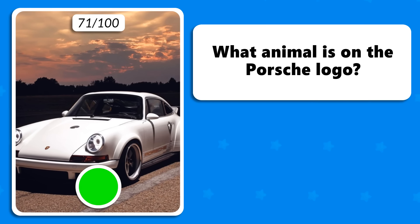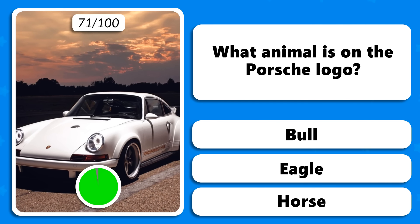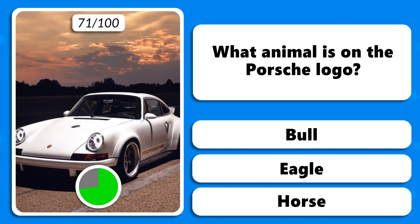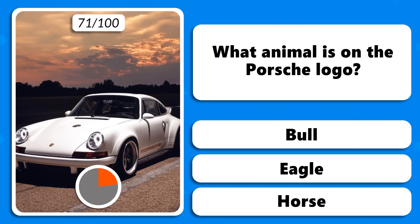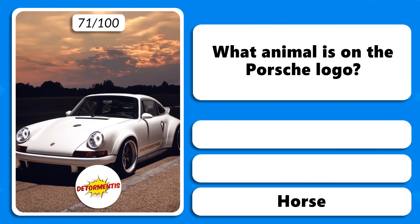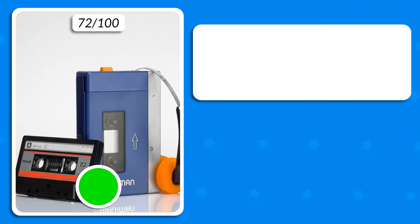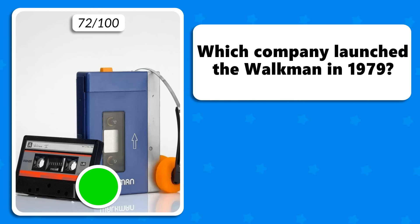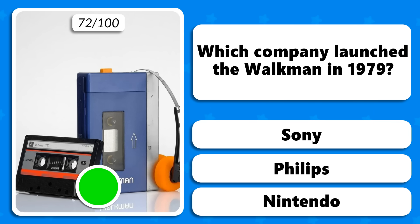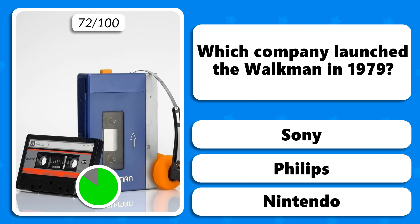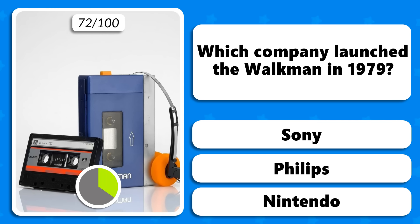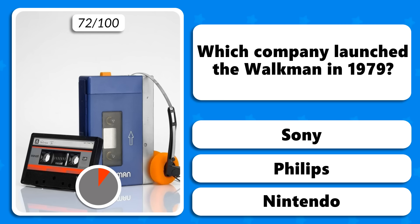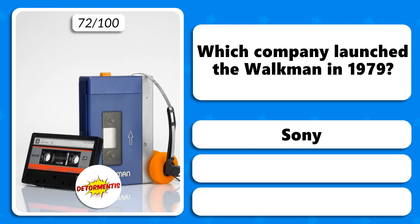What animal is on the Porsche logo — a bull, an eagle or a horse? A horse. Which company launched the Walkman in 1979 — Sony, Philips or Nintendo? The correct answer is Sony.